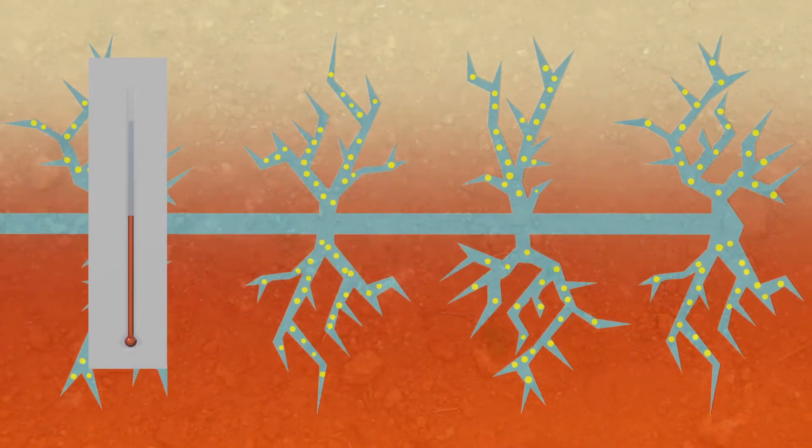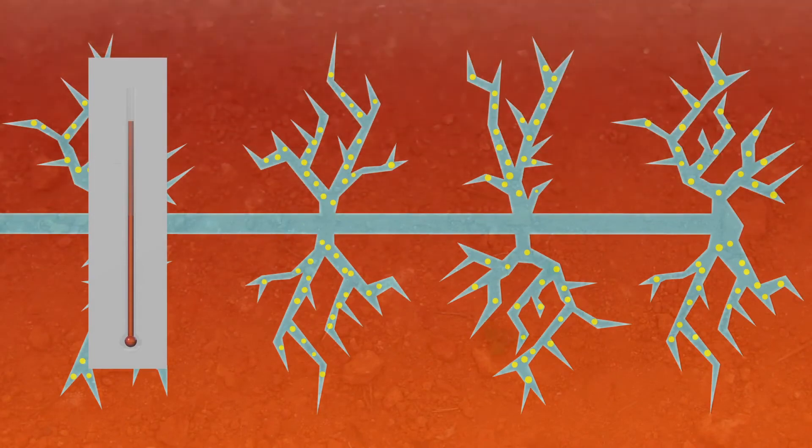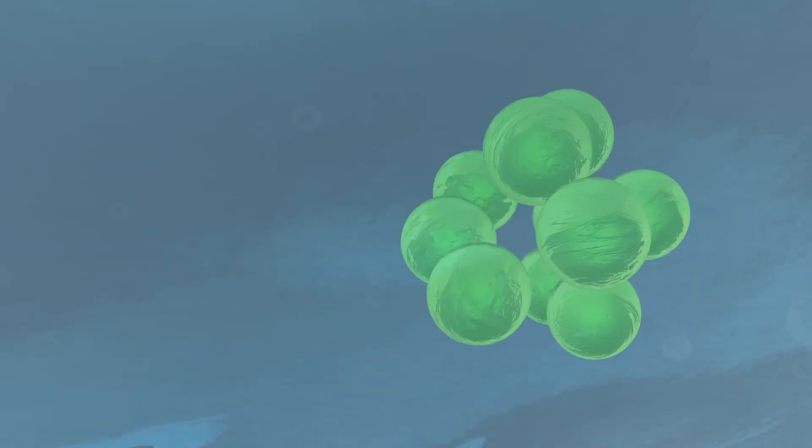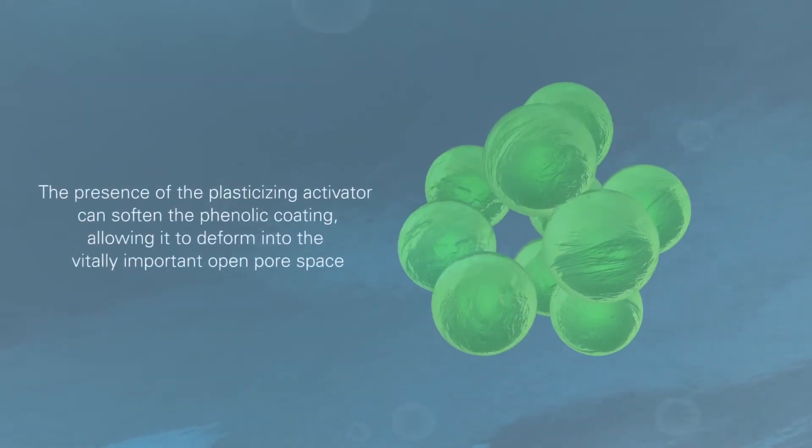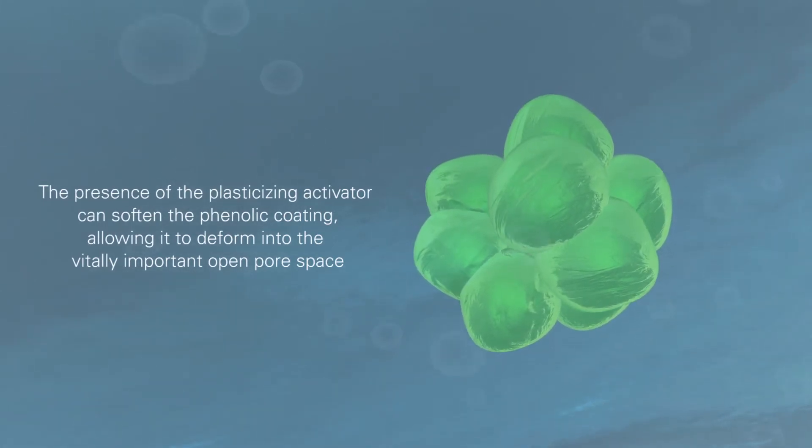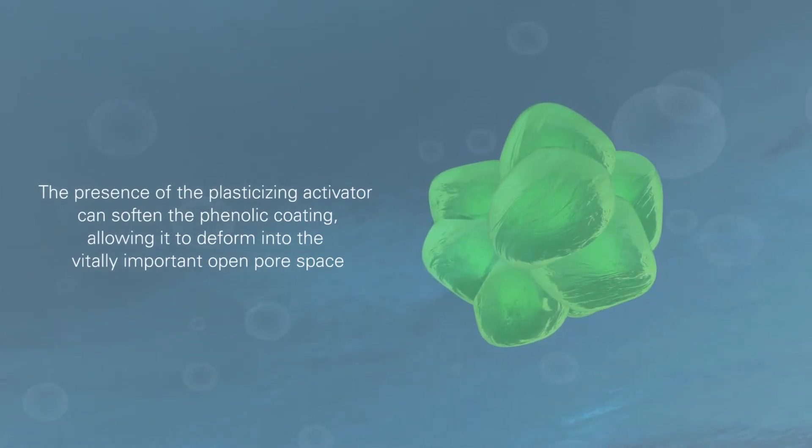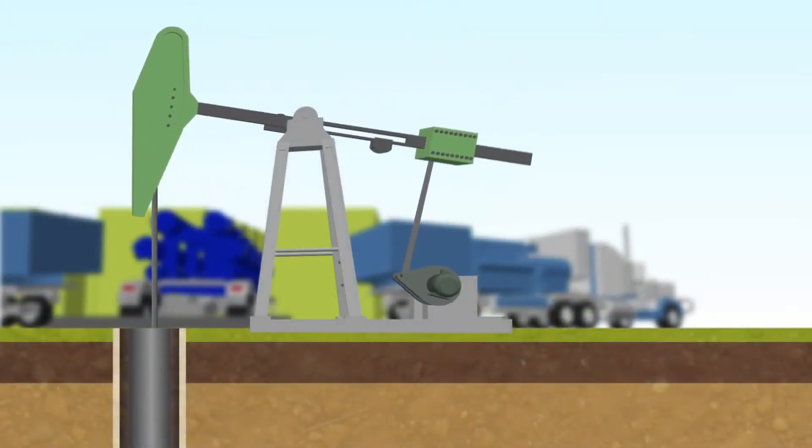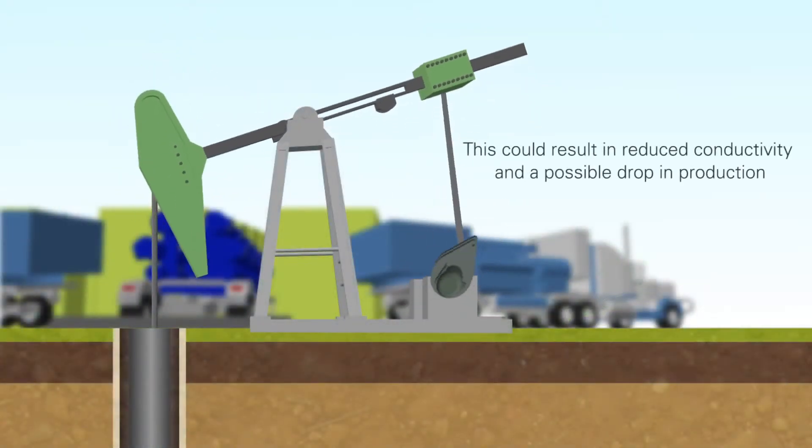Traditional phenolic resin coating has a thermoset bond mechanism. It needs temperature or an activator to create the bond strength. Notice how the presence of the plasticizing activator can soften the phenolic coating, allowing it to deform into the vitally important open pore space that is critical to an effective fracture system. This could result in reduced conductivity and a possible drop in production.